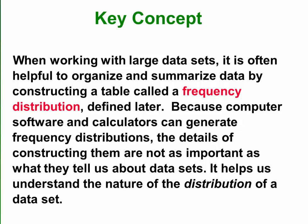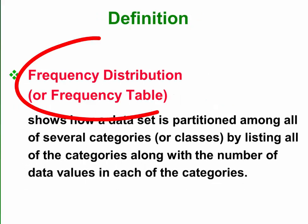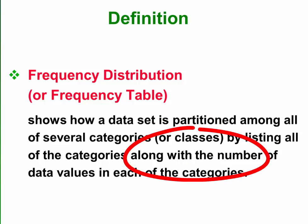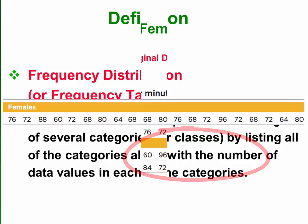Computers and calculators can easily sort this data into frequency distributions or frequency tables. When the data set is put into a frequency distribution or frequency table, the frequency table partitions these data values into different classes. Each of the classes are given along with the number of data values in each one of the categories or classes.